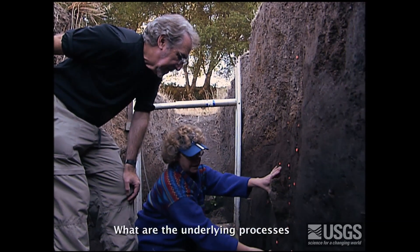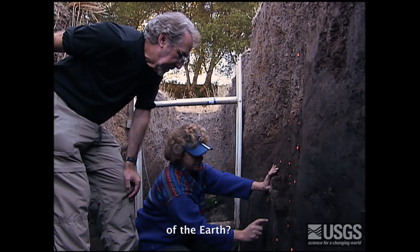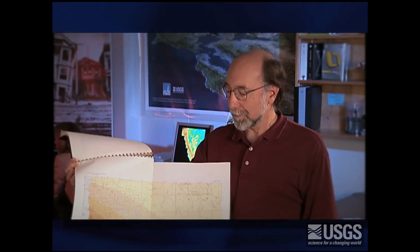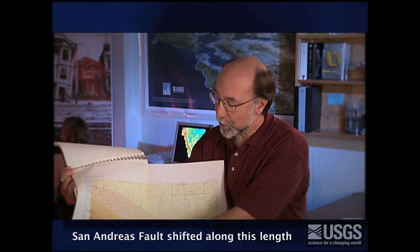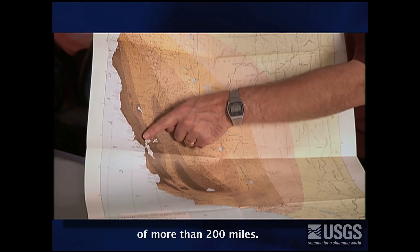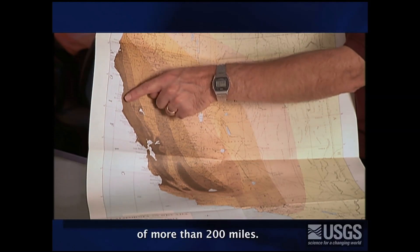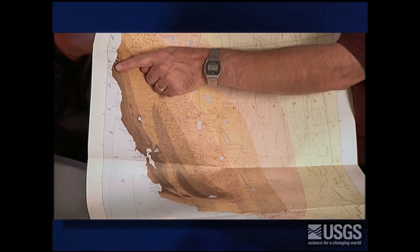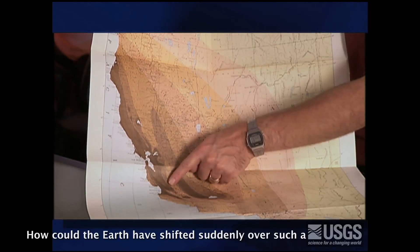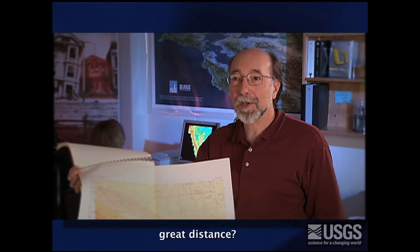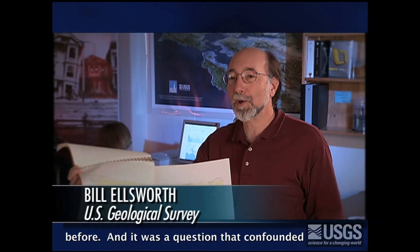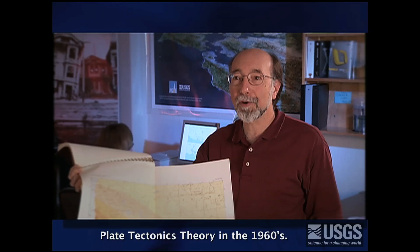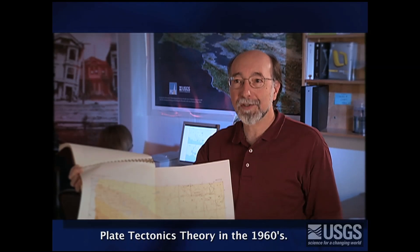What are the underlying processes of the Earth? The Earthquake Commission found that the San Andreas Fault shifted along a length of more than 200 miles. How could the Earth have shifted suddenly over such a great distance? There had been no earthquake like this before, and it was a question that confounded scientists until the development of plate tectonics theory in the 1960s.